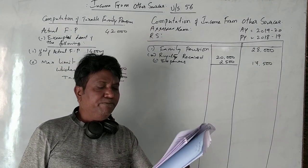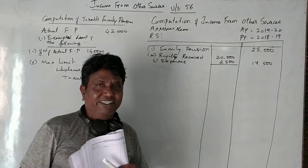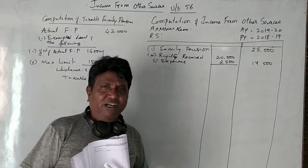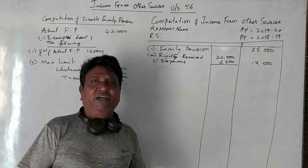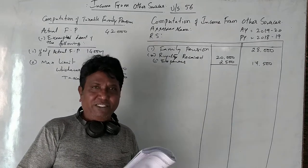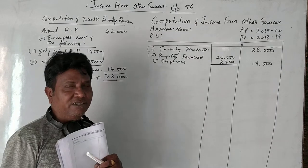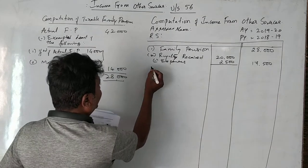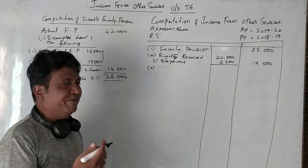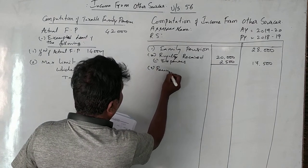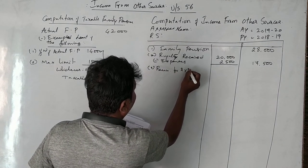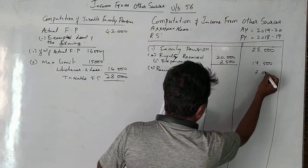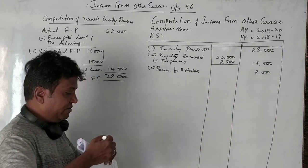Remuneration from articles published in a magazine: if I have written an article in a magazine or journal on a general topic, religion, or public awareness about a disease, and I receive remuneration for that article, it is fully taxable. Remuneration for articles published is 2,000 rupees, which is completely taxable under the head income from other sources.